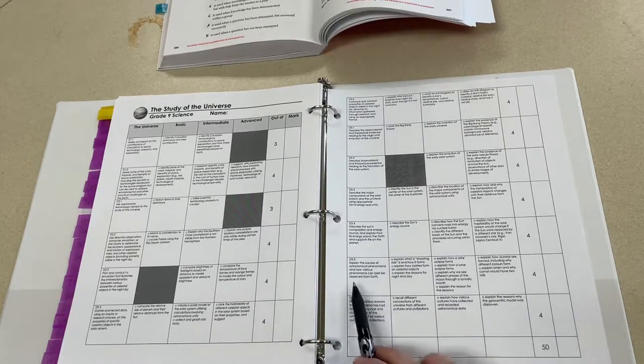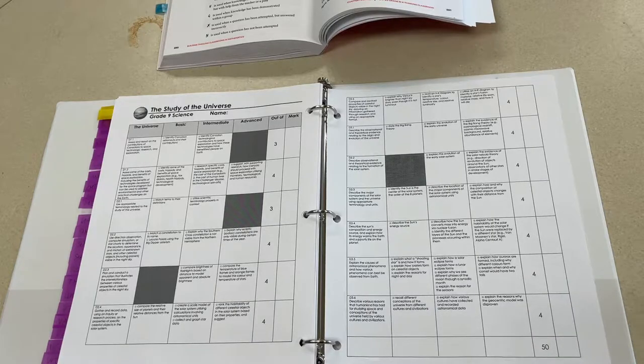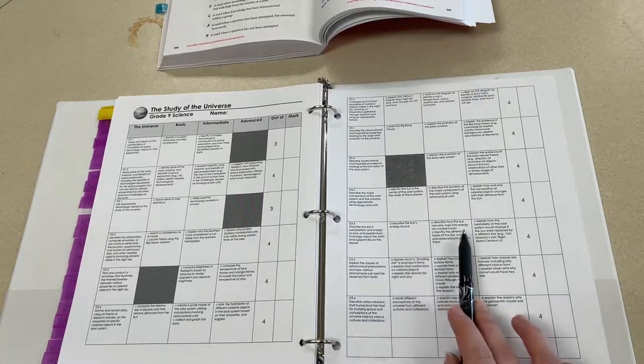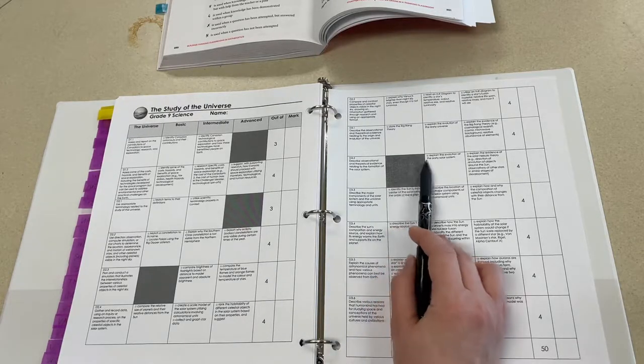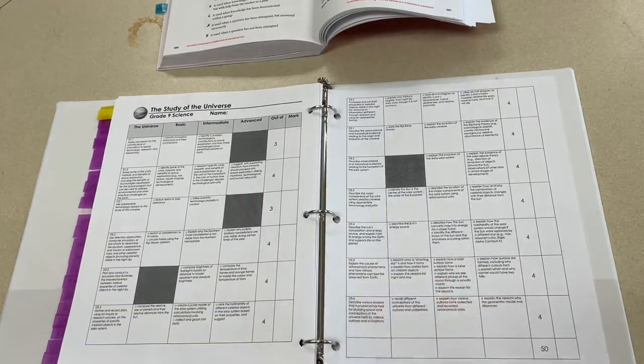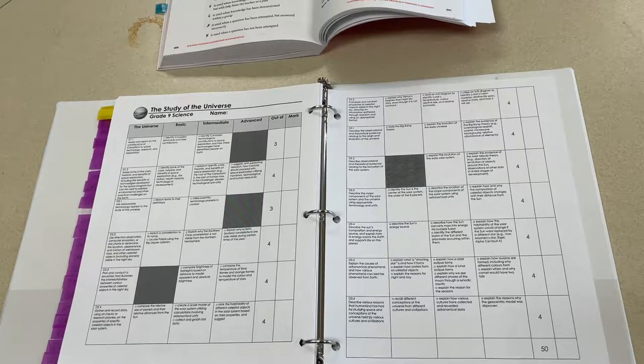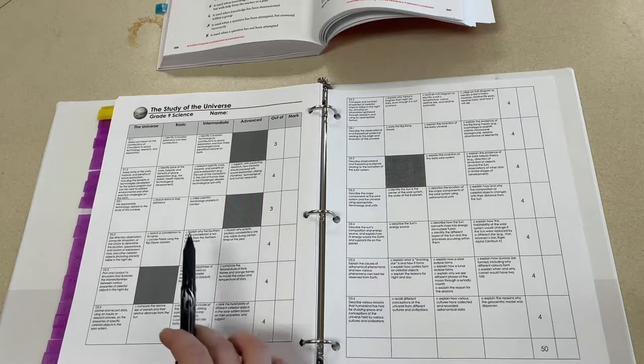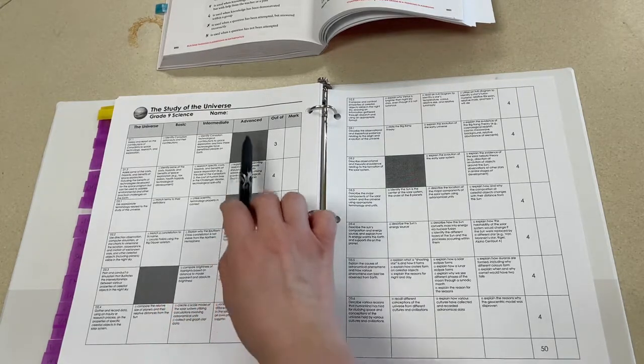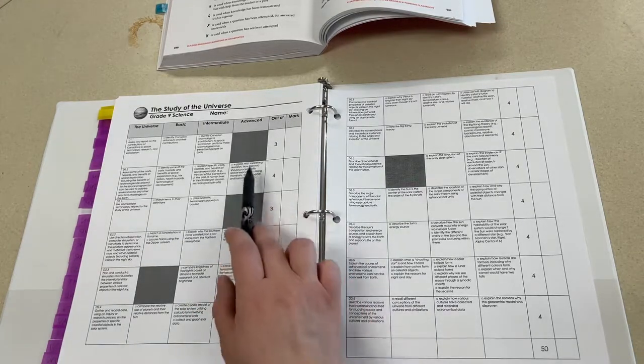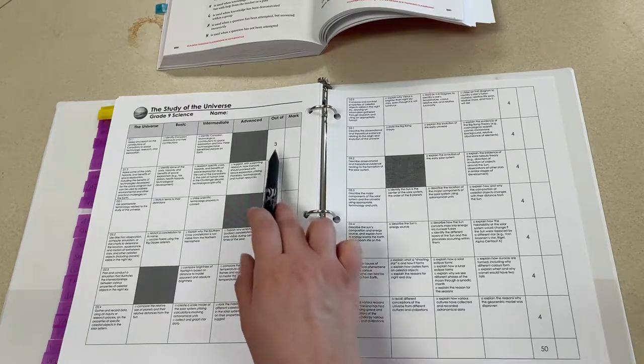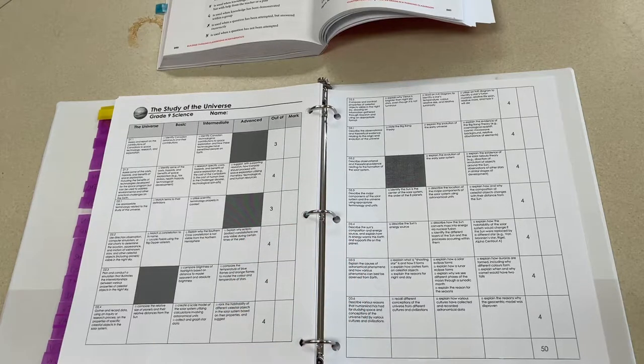I went through my curriculum for each expectation, breaking it down into basic, intermediate, and advanced understanding. In some cases, there was no basic understanding. Like for this one, I didn't feel like there was a basic understanding because it was pretty complex. And for some of these, there was no advanced understanding.